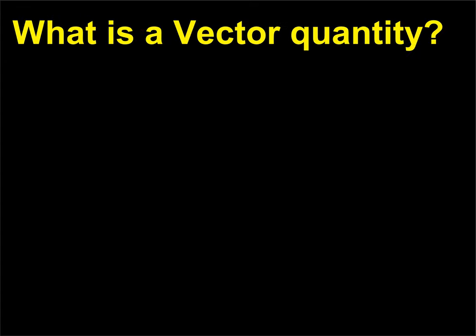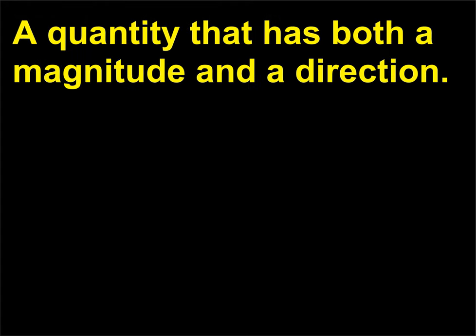What is a vector quantity? A vector quantity is a quantity that has both a magnitude and a direction.